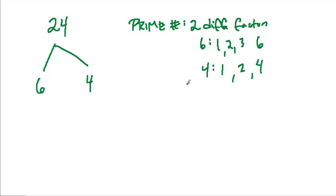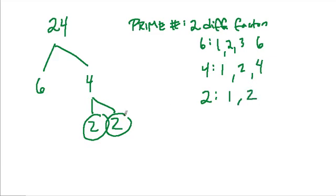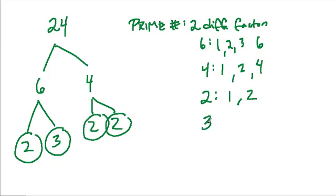So we keep factoring. 2 times 2 is 4, and both 2s are prime numbers, because the only factors of 2 are 1 times 2, so that's a prime number. 6 is equal to 2 times 3, and those are both prime. 2 is prime for the same reason as before, and so is 3.